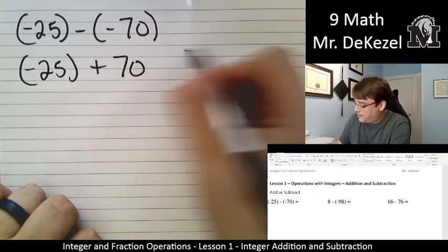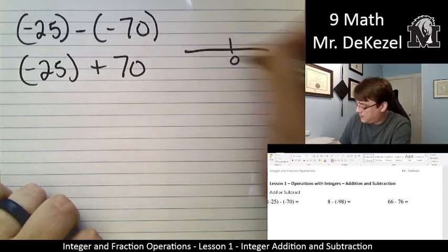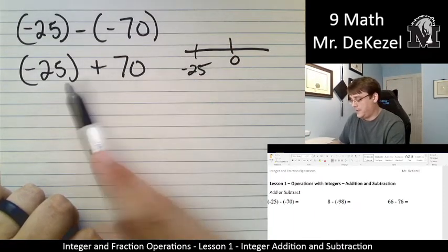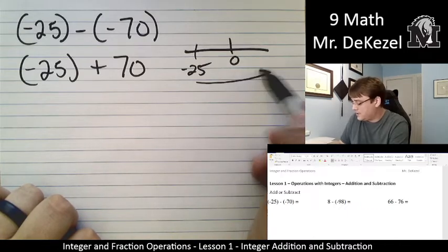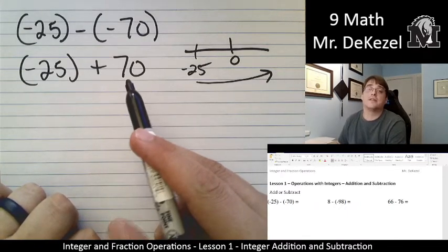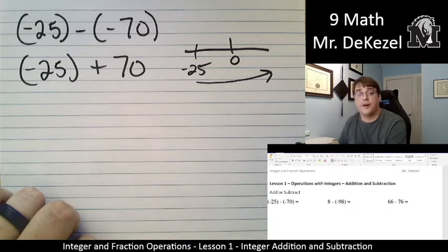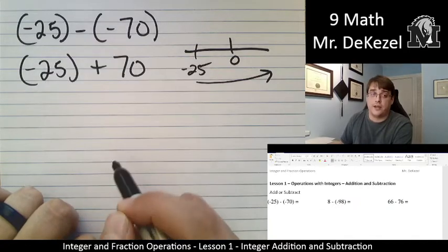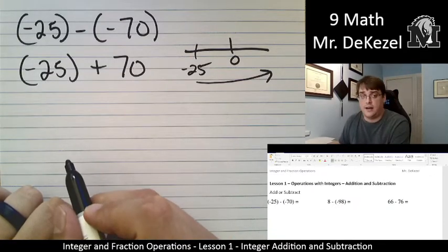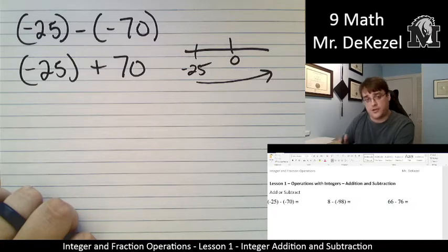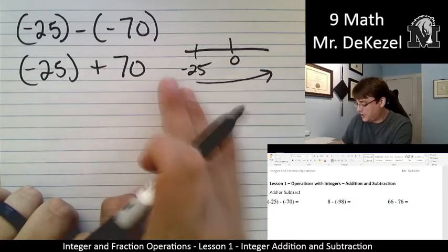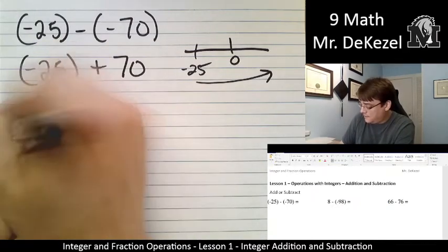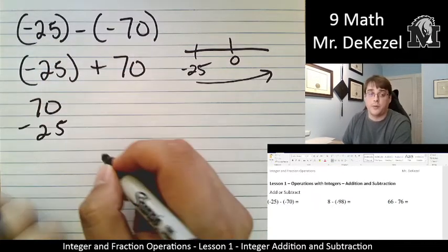Now, if we have a number line with zero here, minus 25 is this way. That means that we are going to be adding 70. We're going to be going this way, and it's more than 25. So that means it's going to end up being a positive number. So one thing we can do is we can just flip these around and subtract 25 from 70. We could also count our way up. Either are valid. But we're starting at minus 25, and we're going towards the positive direction. Let's do 70 minus 25 to get what we will end up with.